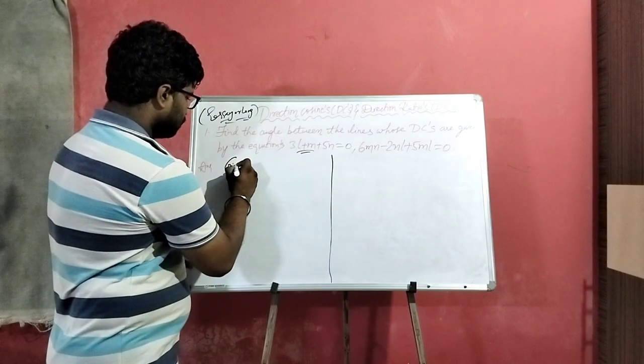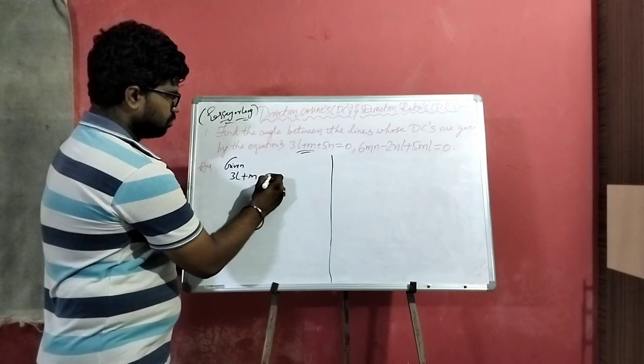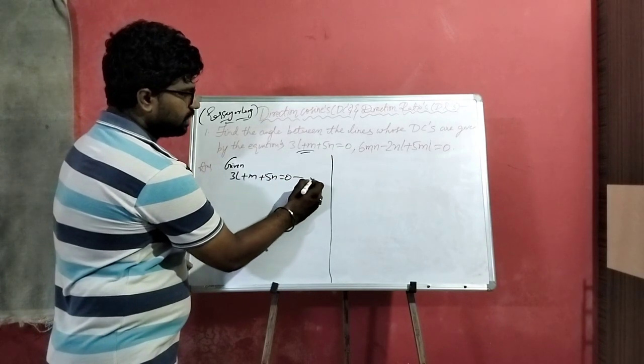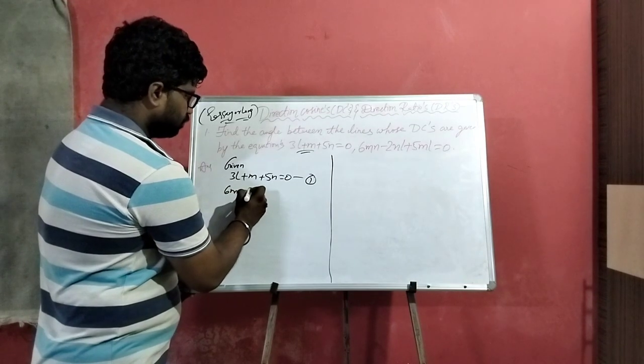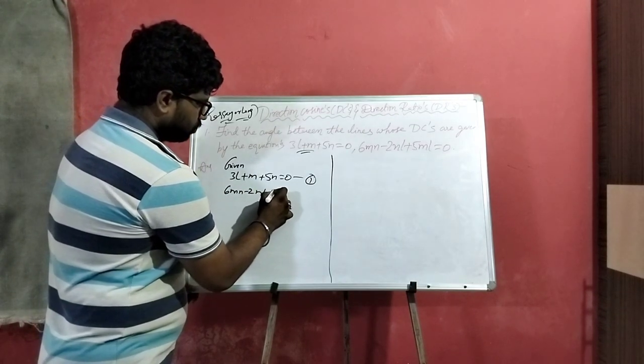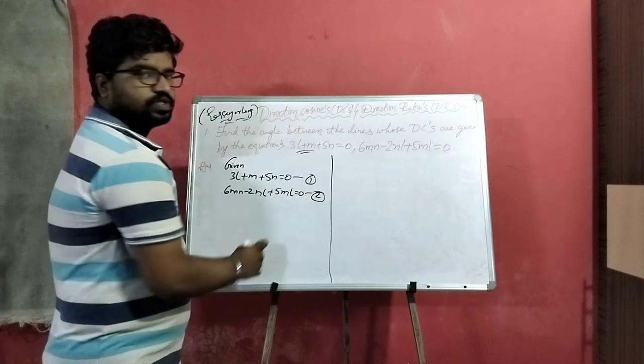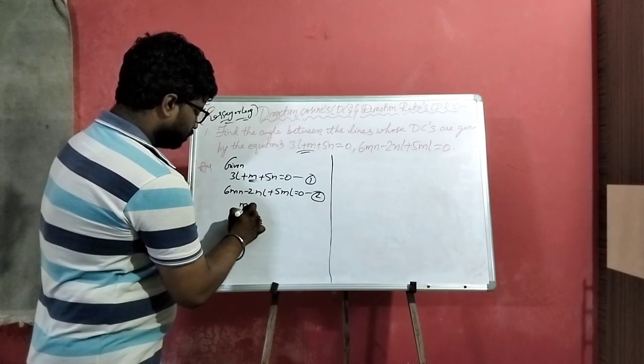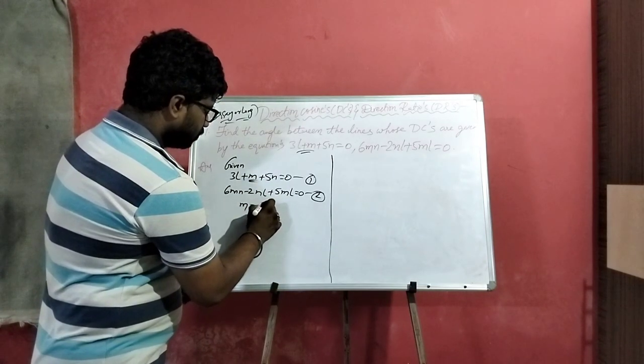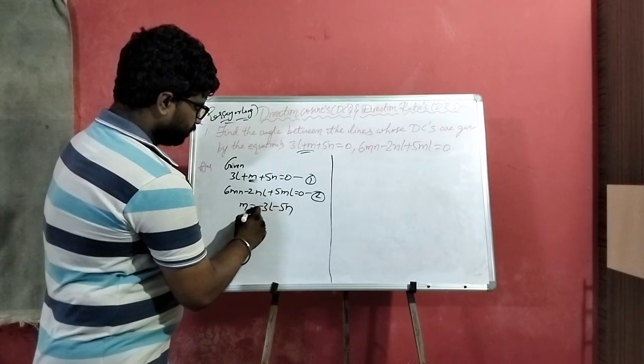5N equals the first equation. Now second equation. Using first equation, find M value. So M is equal to minus 3L minus 5N.